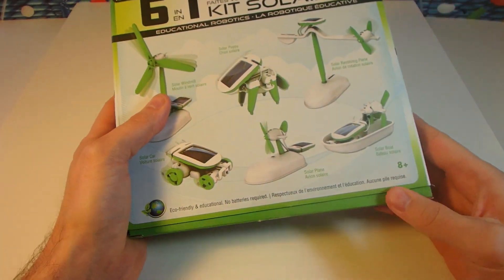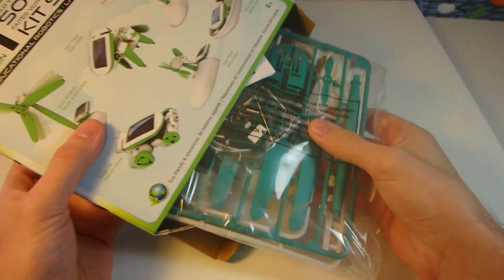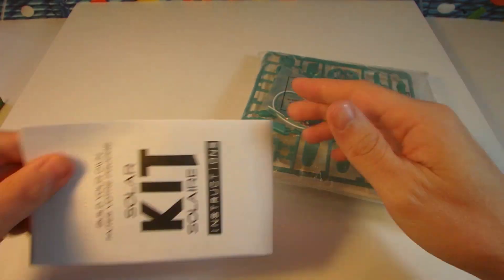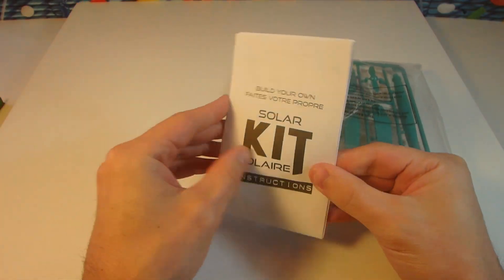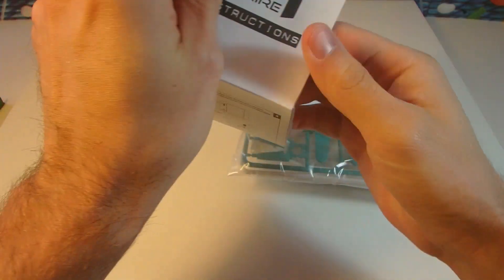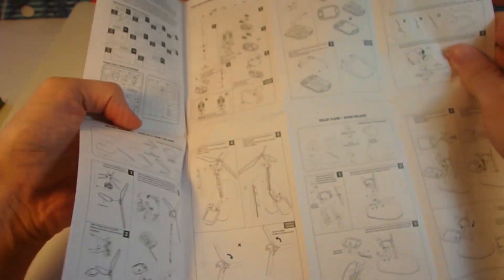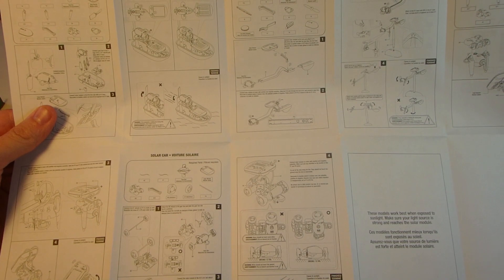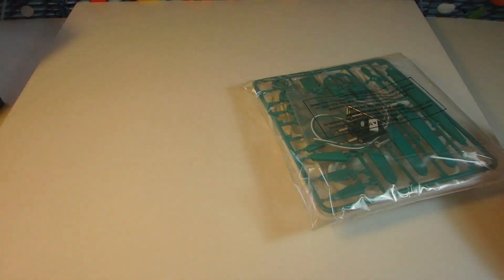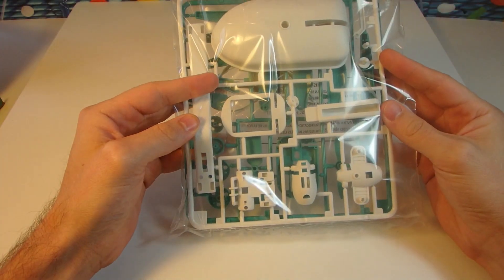So we got our solar kit instructions, probably gonna show us how to make each and every one of those things. Wow, lots of instructions for those six different things we can make and our bag of parts.